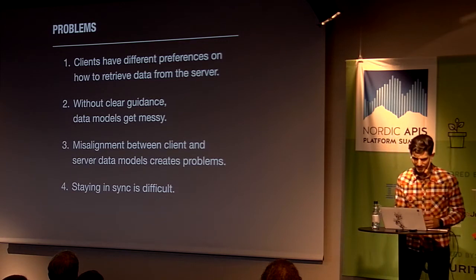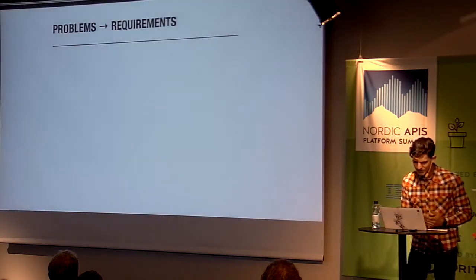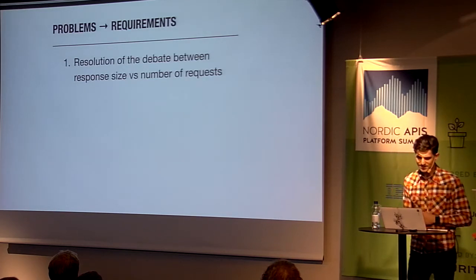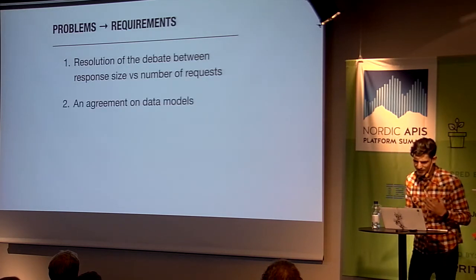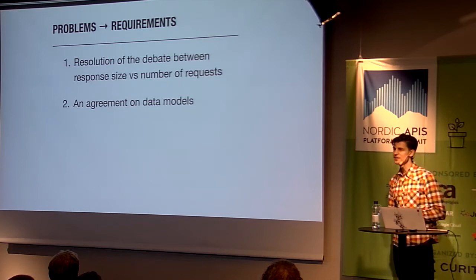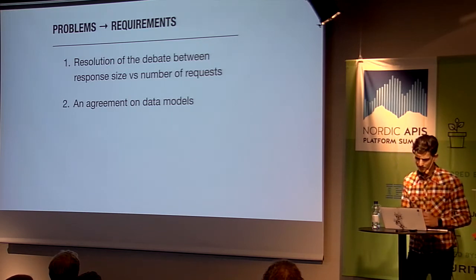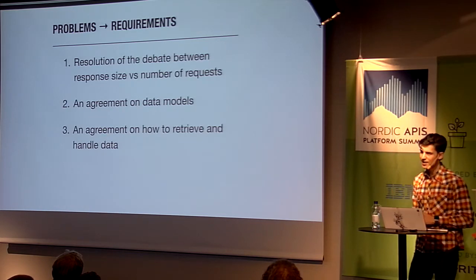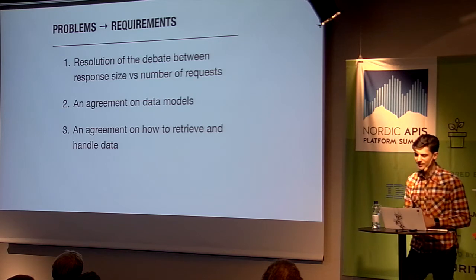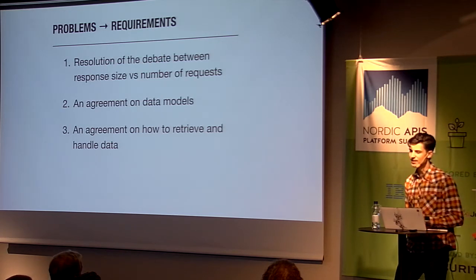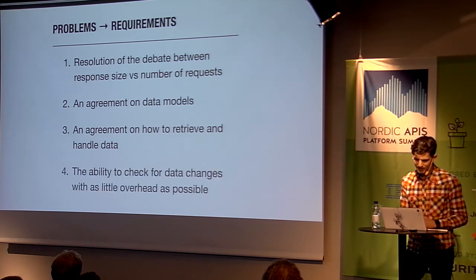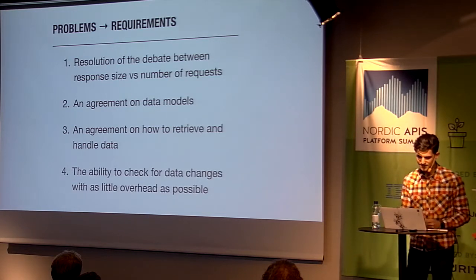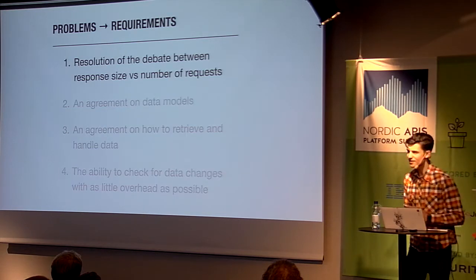So here are the top four problems that clients had with the web API. To solve them, we needed to: settle the debate between number of requests versus request size; agree on data models and how data fits together; agree on how to handle data between client and server and a common approach to selectively retrieving parts of data and related data; and the ability to check if data has changed with as little overhead as possible.